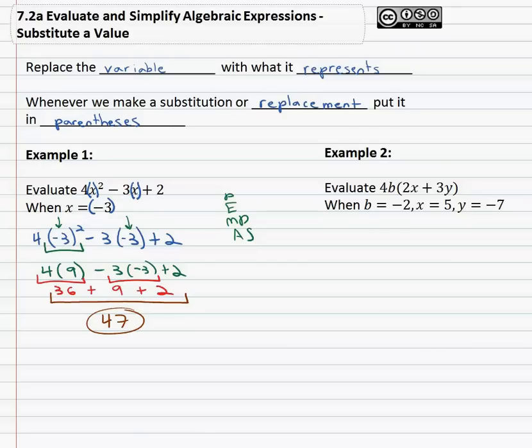Let's try another example, an example that's got several variables in it. We want to find 4b times 2x plus 3y when b is negative 2, x is 5, y is negative 7.